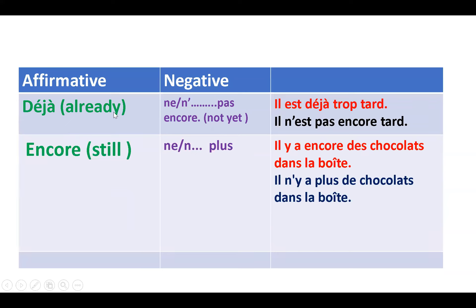Next, 'déjà' (already) — the negation becomes 'pas encore' (not yet), using 'ne...pas encore.' For example, 'il est déjà trop tard' — it is already too late. Negation: 'il n'est pas encore tard' — it is not yet late. So 'not yet' corresponds to 'ne...pas encore.'